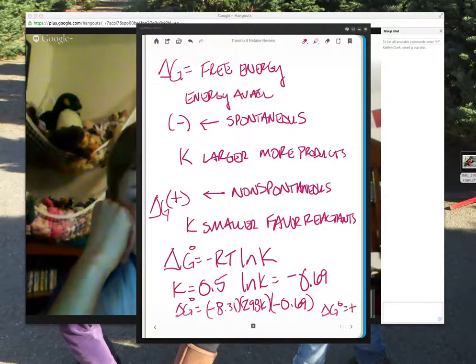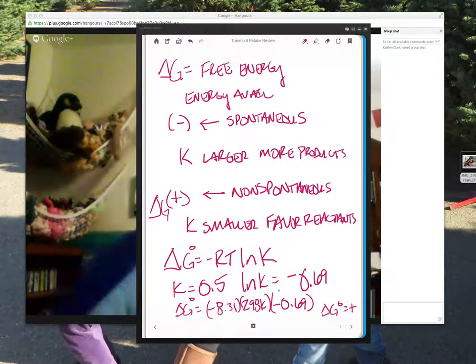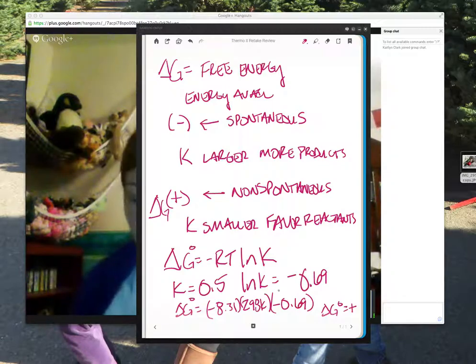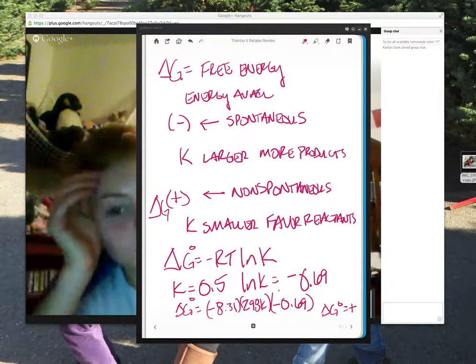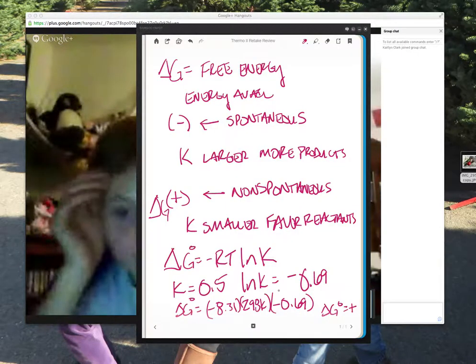So where delta G was positive, K was smaller, K was 0.5. Now if K becomes larger than one, if you plugged even just 1.5, natural log of 1.5 in your calculator, then you get a positive number. And now delta G naught is negative. And that's how it favors the products. That makes sense.